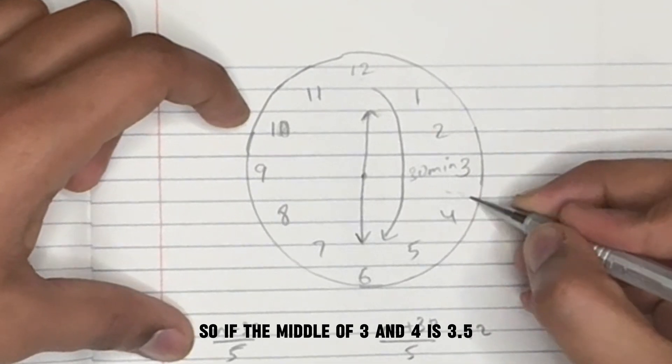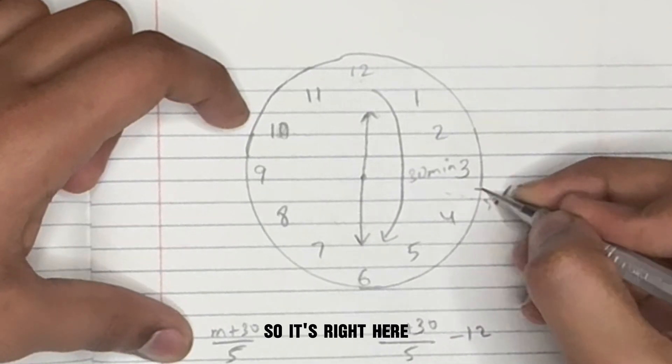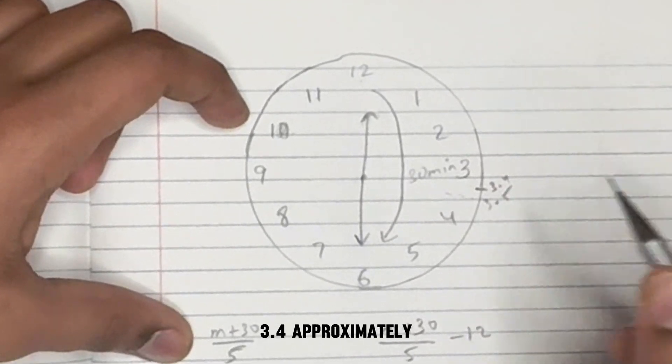So if the middle of 3 and 4 is 3.5, then 3.4 is just above. So it's right here, 3.4 approximately.